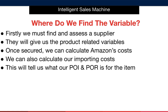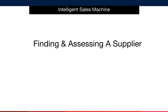Like everything in this system, this will be a long-term relationship you're going to build. So it makes complete sense to invest time finding the right supplier for you who operates in a way that suits your business. Once we secure our supplier, we can calculate Amazon's costs as well as our importing costs, which will ultimately tell us what our POI and POR is for each item. Finding and assessing a supplier is thankfully made a lot simpler thanks to the internet. Here's how we find, assess and work with our suppliers.